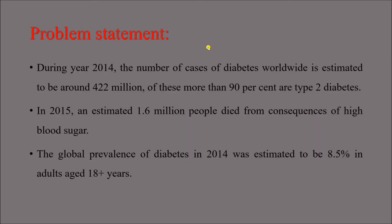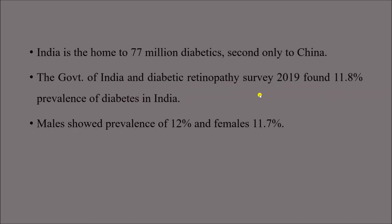Regarding the problem statement: some data in Park's textbook are older, but a survey by the Government of India — the Diabetic Retinopathy Survey conducted in 2019 — found 11.8% prevalence of diabetes in India. That means if 100 people are screened, approximately 11.8% will test positive. Male prevalence is 12% and female prevalence is 11.7%, so the prevalence is very close between genders.